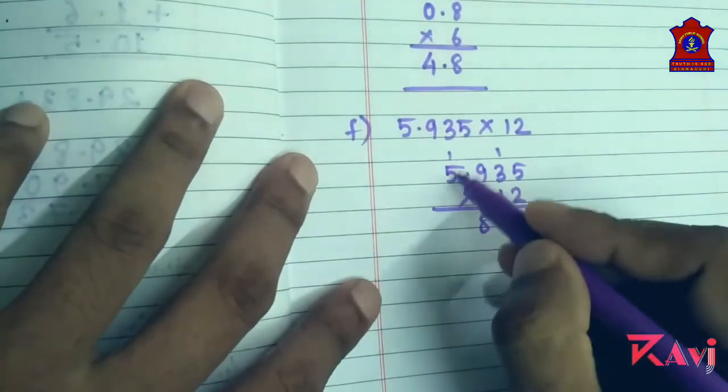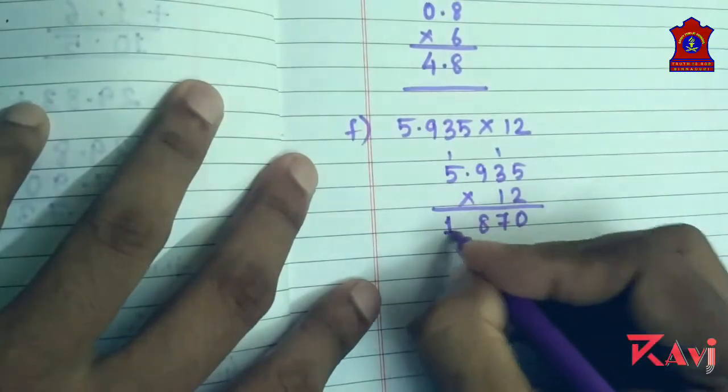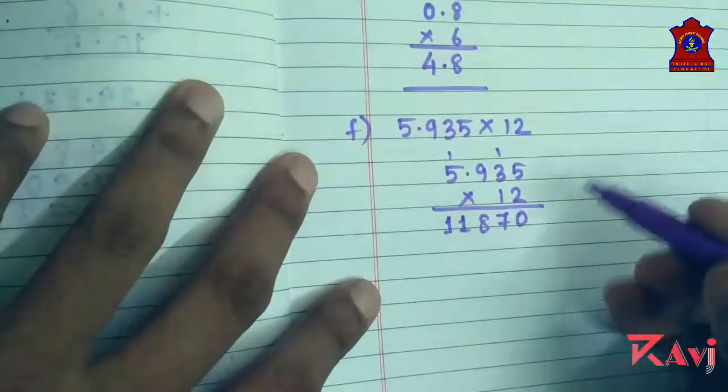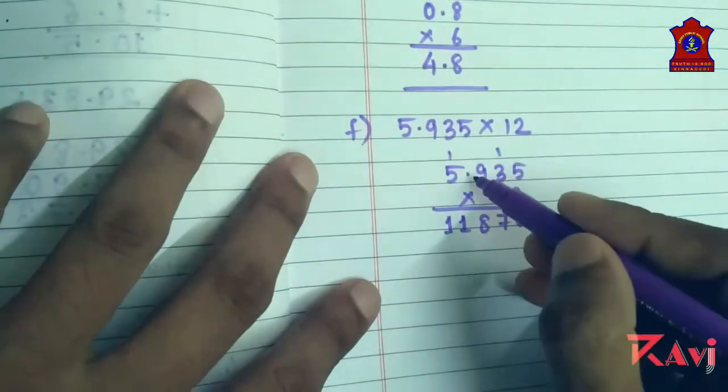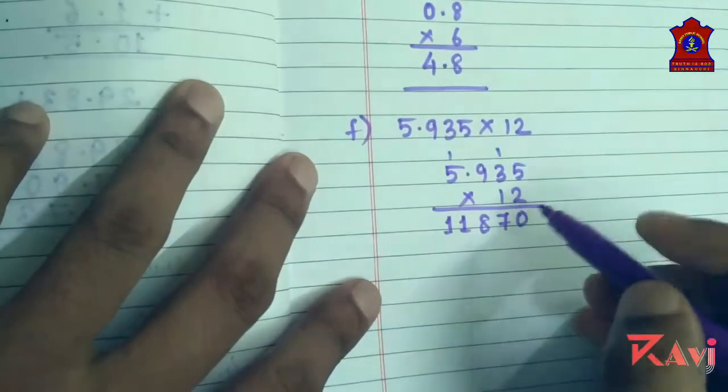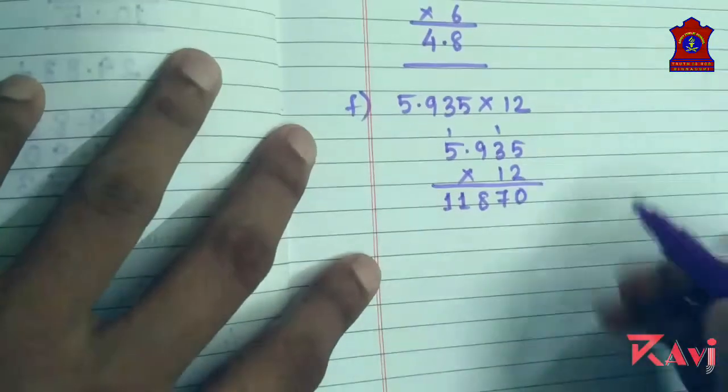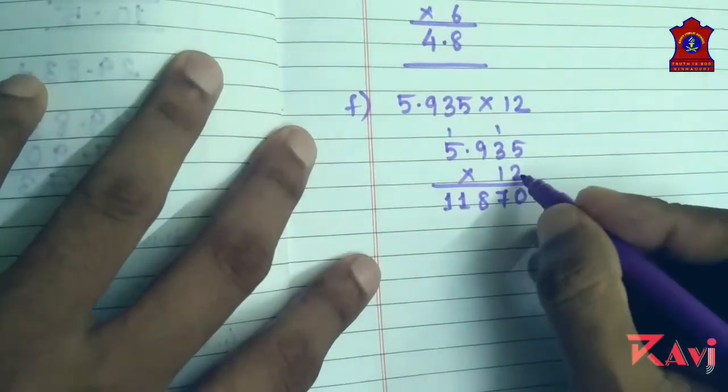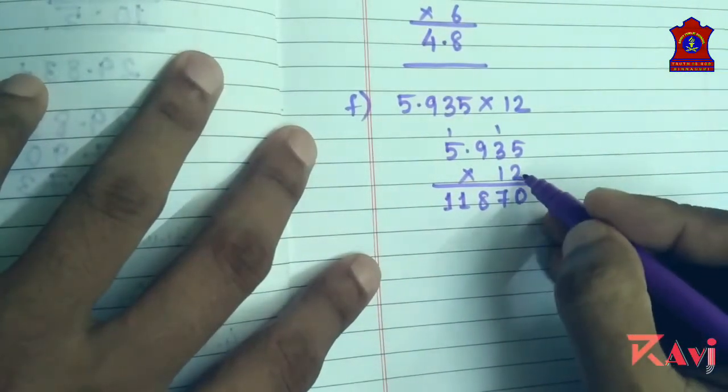While multiplying this, no need to put decimal in this. No need to put the decimal in the initial product. Now we have already completed a multiplication by two. Put a cross or you can put a zero.